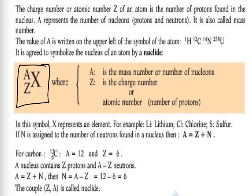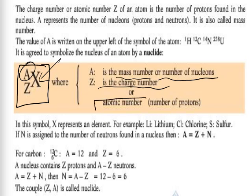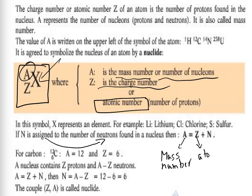The symbol X represents an element — for example carbon, oxygen, hydrogen, nitrogen, phosphorus, potassium, calcium. X represents the element, Z represents the charge number or the atomic number. The mass number A is equal to Z, the atomic number, plus capital N, the number of neutrons.